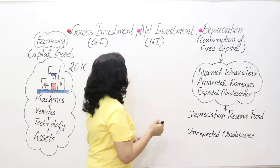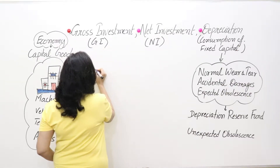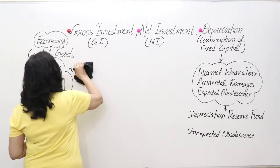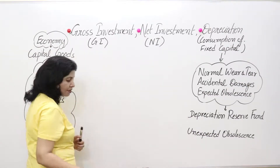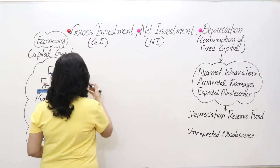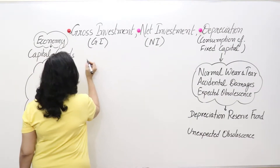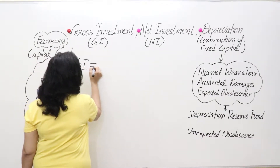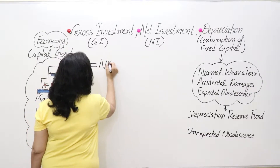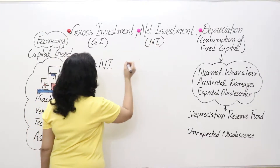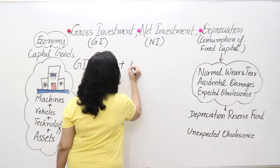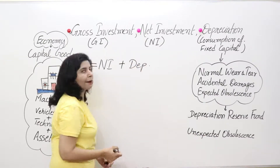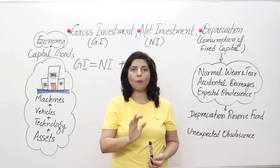Gross investment comprises of two components. Gross investment (GI) comprises of net investment and depreciation. So GI is equal to net investment (NI) plus depreciation (dep). These are the two components of gross investment.